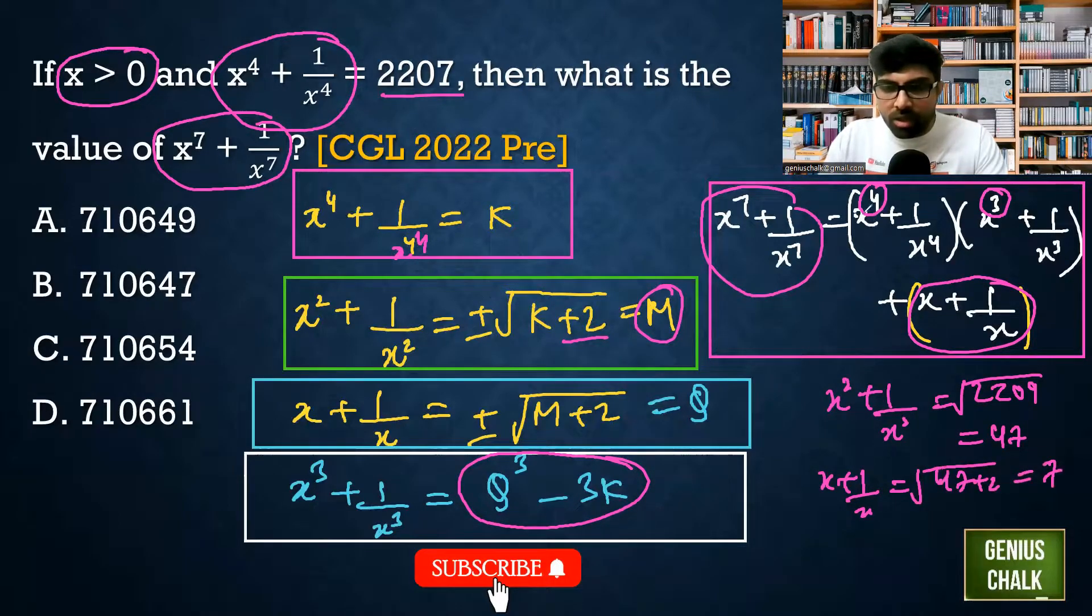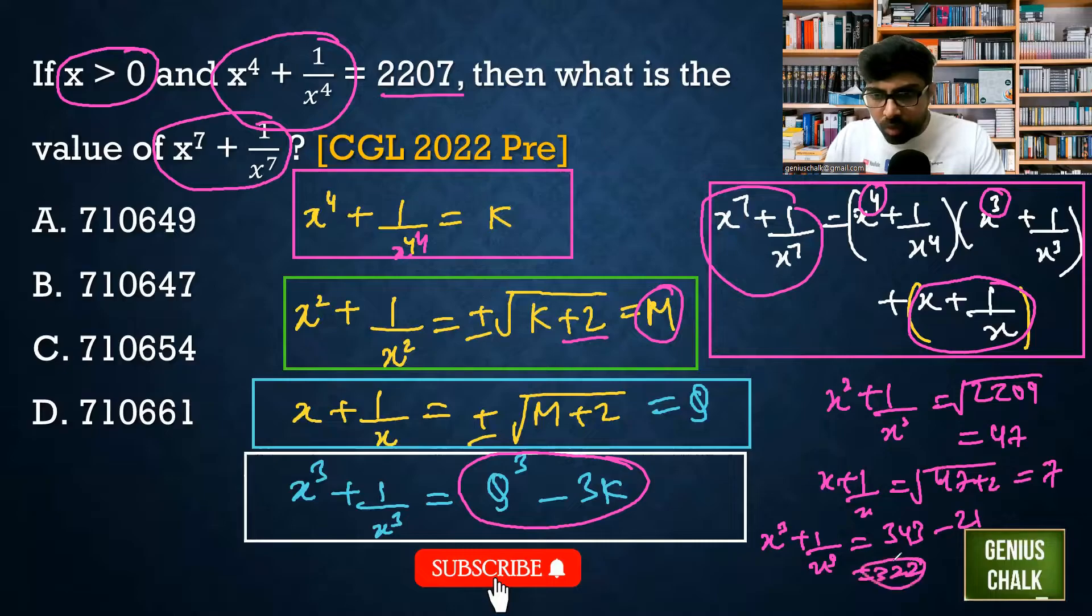If you have got this, then what is x cube plus 1 by x cube? That is 7 cube minus 7 into 3 times 21, which is 343 minus 21, and that will be 322. So just keep this value.